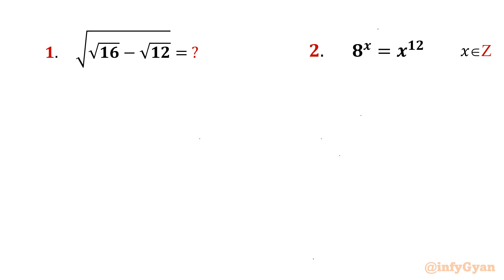Welcome back to InfiGyaan, my dear friends. Today in this video we are having two very interesting and challenging math Olympiad problems. Problem number 1: square root of (square root 16 minus square root 12), and problem number 2: 8^x = x^12, where x belongs to integers. I will solve both problems in two different ways.